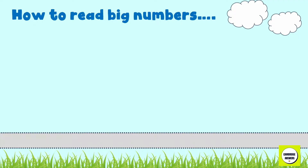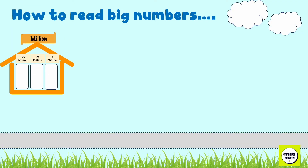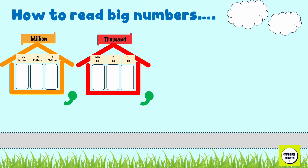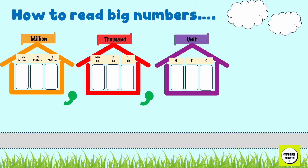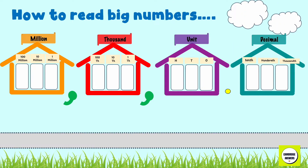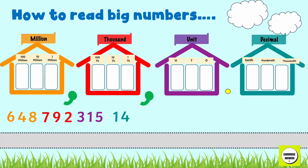To read large numbers, imagine them as houses. Each section is a house with a name: the million house, the thousand house, the unit house, and the decimal house. When you see a number, start by putting each digit into its respective house.